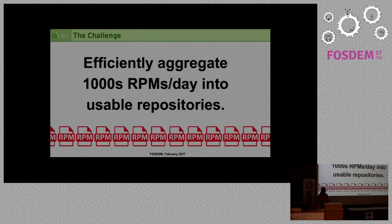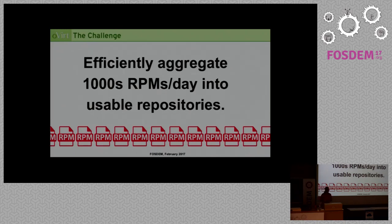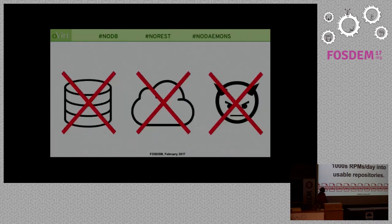So what's the challenge? Why did we build it? oVirt is quite a large application — it consists of multiple parts. There are packages in RPMs, and we really have to deal with a lot of RPMs and also ISOs. At some times we process around thousands of RPMs a day and we somehow need to make usable composites out of these so users can install them, testers can test them, and all this. Obviously we don't have infinite resources and we need to do it efficiently. That's why this tool was created.